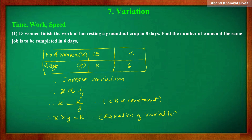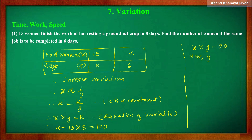The equation of variation is x into y equals k. Now find the value of k using the given values: x is 15 and y is 8, so k equals 15 × 8 = 120. The equation of variation becomes x × y = 120. We are given y = 6, so x × 6 = 120, therefore x = 120 ÷ 6 = 20. So 20 women are required to complete the task in 6 days.